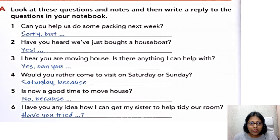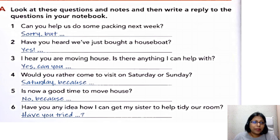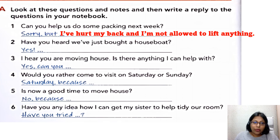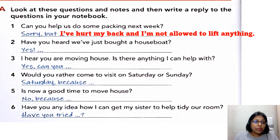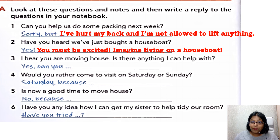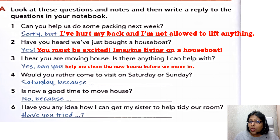Let's look at how to reply questions in your informal letter. Make sure your replies are related to the questions. Number one: 'Can you help us do some packing next week?' Reply: 'Sorry, but I've hurt my back and I'm not allowed to lift anything.' Number two: 'Have you heard we've just bought a houseboat?' Reply: 'Yes, you must be excited — imagine living on a houseboat!' Number three: 'I hear you are moving house. Is there anything I can help you with?' Reply: 'Yes, can you help me clean the new house before we move in?'